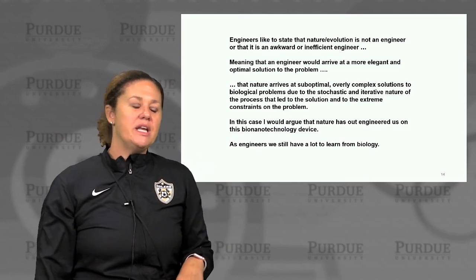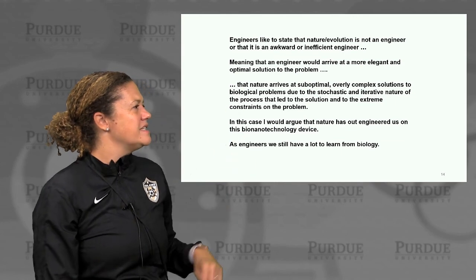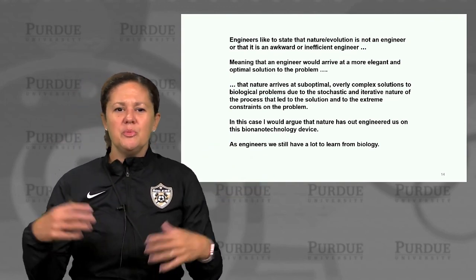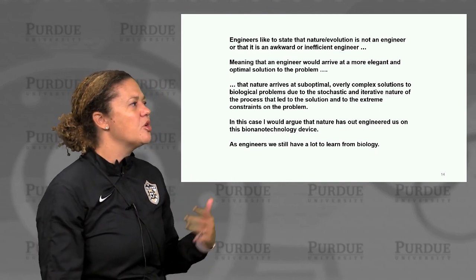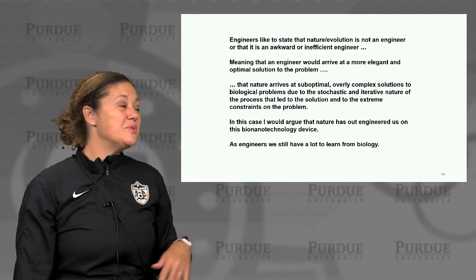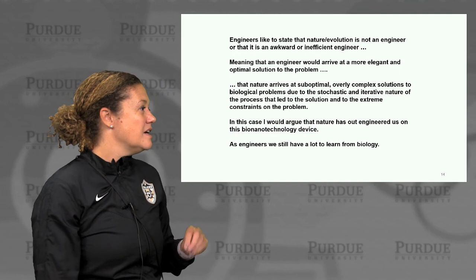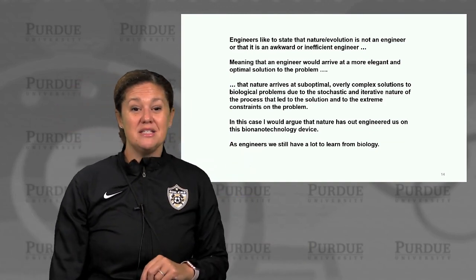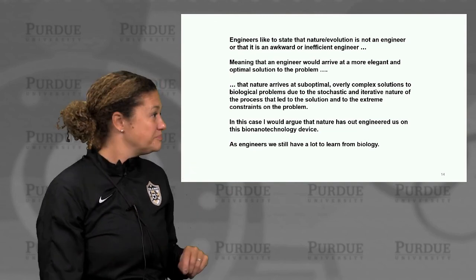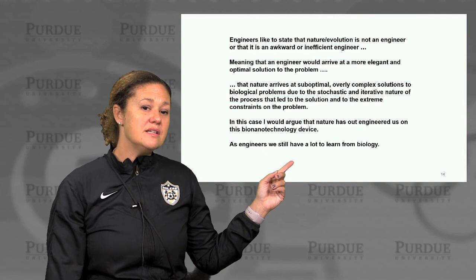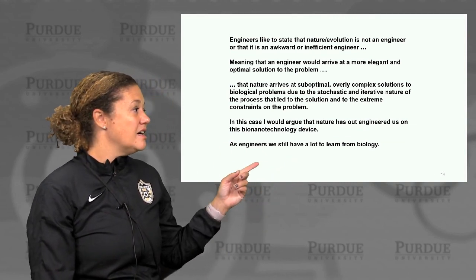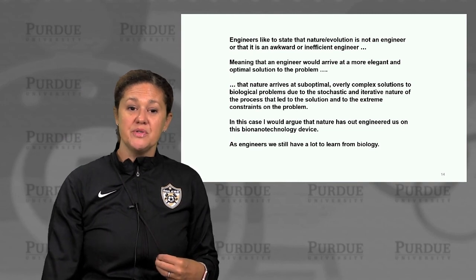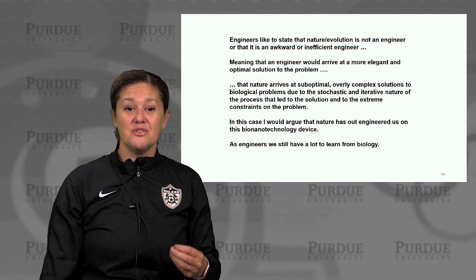You'll often hear engineers state that nature or evolution is not an engineer — that it's an awkward or inefficient engineer, meaning a human engineer designing de novo would arrive at a more elegant and optimal solution. But in this case, I would say that biology is still out-engineering us in many ways. We have very few biosensors designed with changing dynamic range, for example, which comes from other design features in the signaling cascade as well. We can't yet design cellular sensors that outperform the photoreceptors. There's a lot we can learn and extract from these principles to create the next generation of cellular biosensors or cell-inspired biosensors.